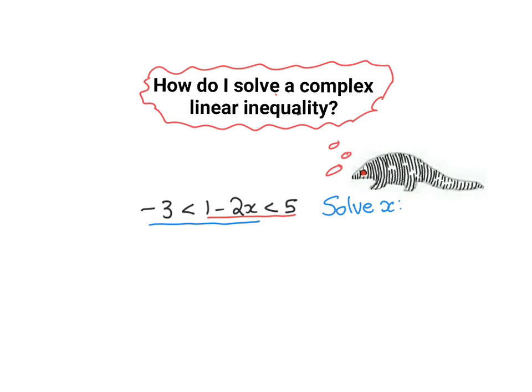So to get the x alone, I need to take the 1 away. So I would subtract 1 on three sides. That's minus 3, minus 1 is minus 4. If you subtract 1 here, you remain with 2x. If you subtract 1 there, it becomes 4.